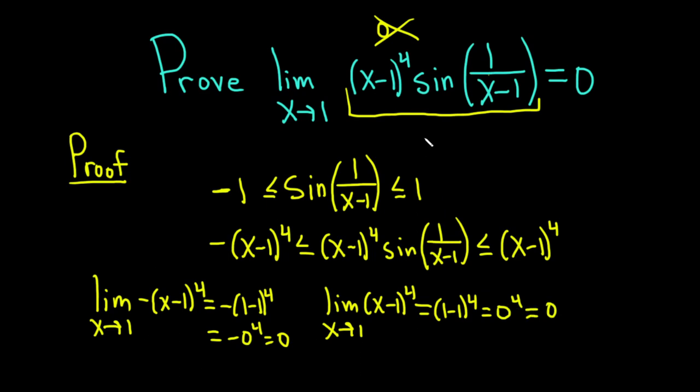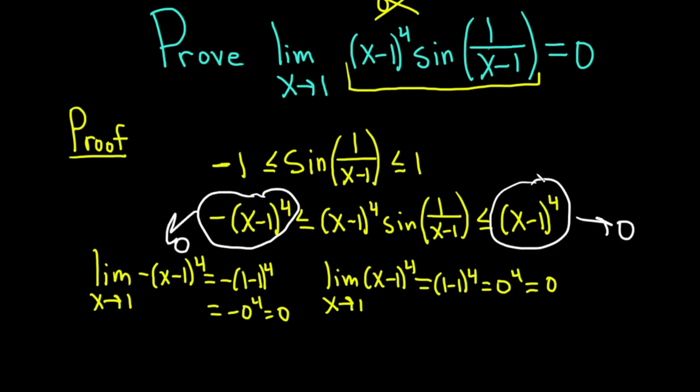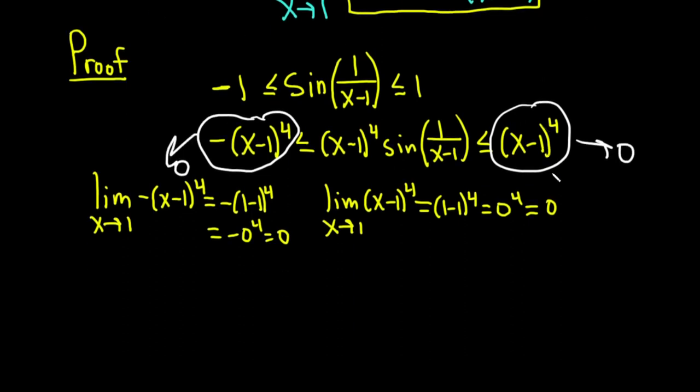So now we've satisfied the hypotheses of the squeeze theorem. We have several things. We've shown that this piece here approaches 0. We've shown that this piece here approaches 0. We also have shown that this function here, which is our original function, is trapped between these two functions. So if this approaches 0 and this approaches 0, then whatever is in the middle also approaches 0 by the squeeze theorem. So all we have to do is now just state that.